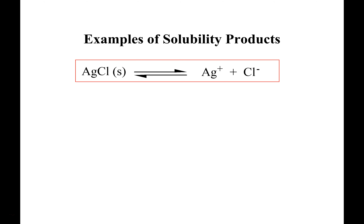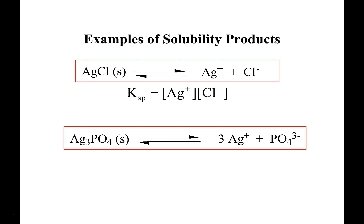Let's write the Ksp expression for silver chloride. The stoichiometric coefficients for silver ion and chloride ion are both one, so the Ksp expression is simply: Ksp = [Ag⁺][Cl⁻]. Life gets more interesting when we have more than one particle on the product side. For silver phosphate, Ag₃PO₄, we get three Ag⁺ ions and one PO₄³⁻ ion. A very common mistake is forgetting to account for that stoichiometry.